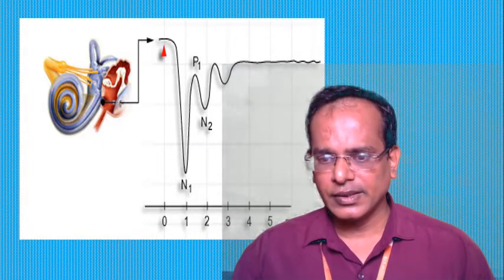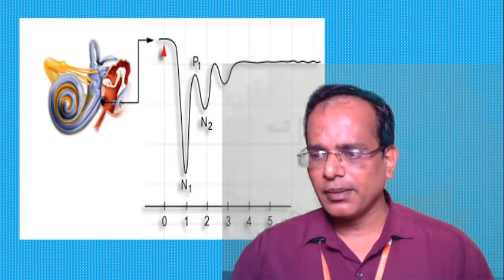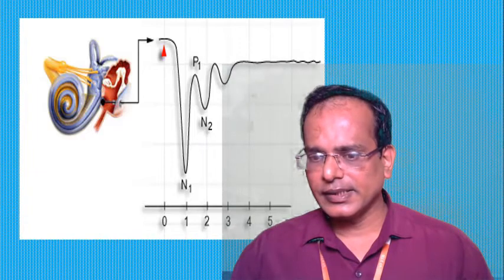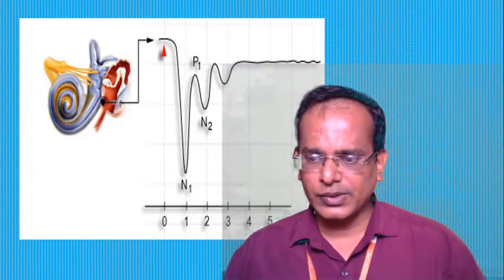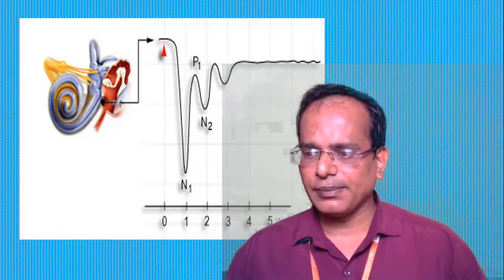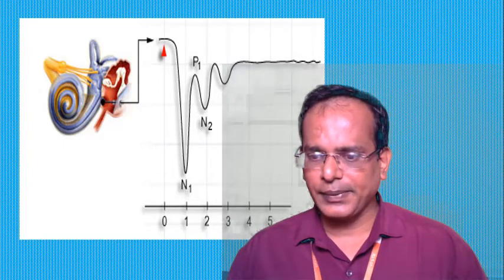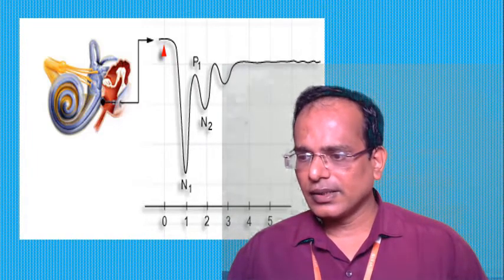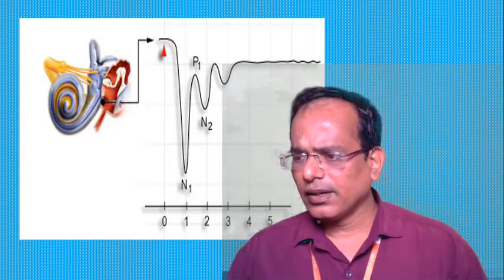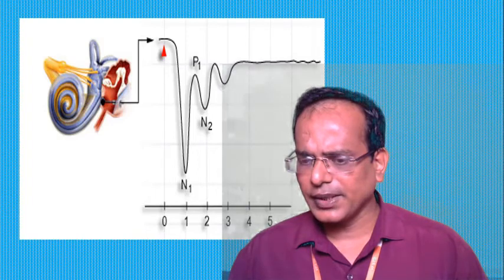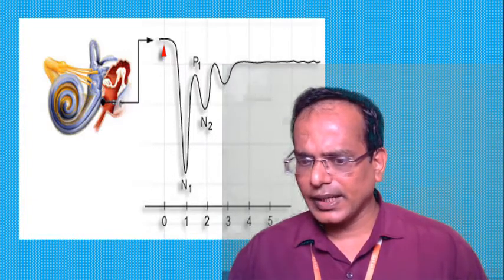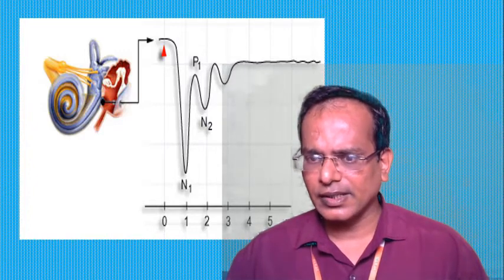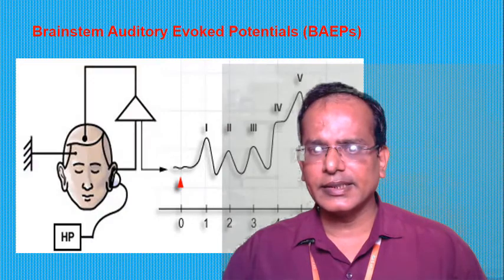After sound stimulation, this potential is more complex than the single unit AP, but the first wave, denoted N1, corresponds to the single unit AP. The amplitude of the CAP is measured between N1 and P1, in the order of several dozen microvolts. Successive responses are added and averaged to eliminate background electrical noise.